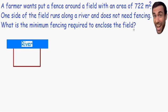The first thing I like to do is to draw a picture. So I drew a picture here on the left. Notice how we have this river in blue, and we also have this fencing enclosing the field in dark red. Notice how there's no fence running along the river.